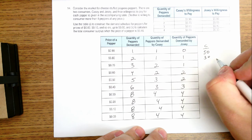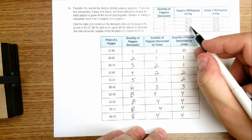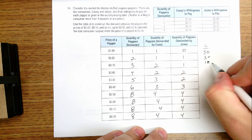She has $0.30. The third one, she was willing to pay $0.50, but if she only has to pay $0.40, then there's $0.10 of surplus for Casey.